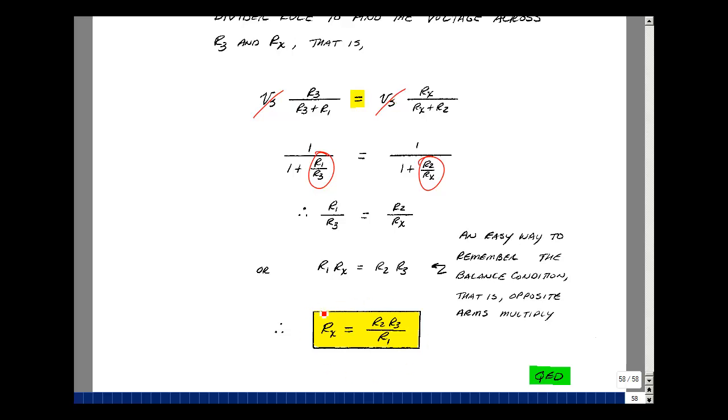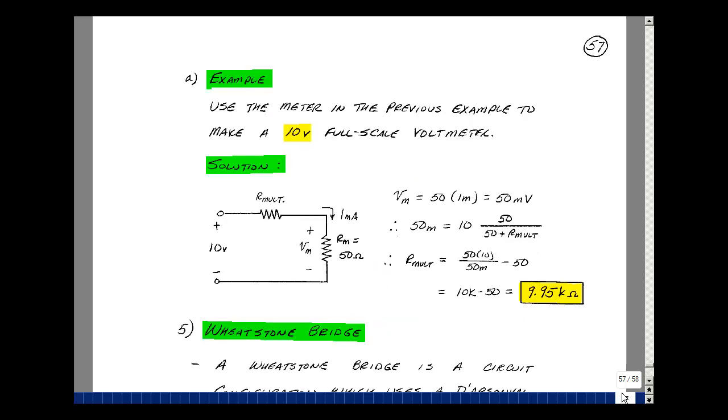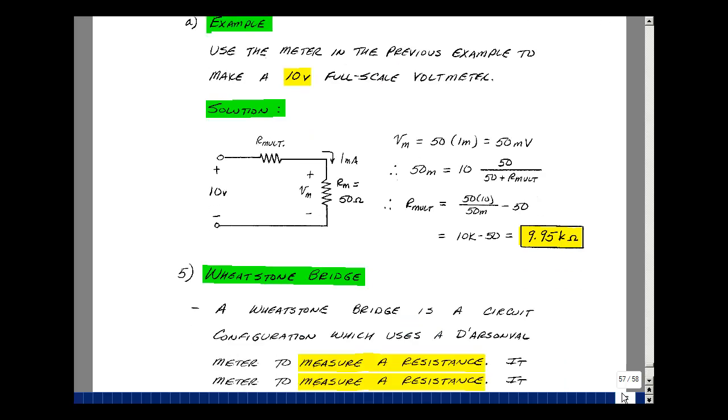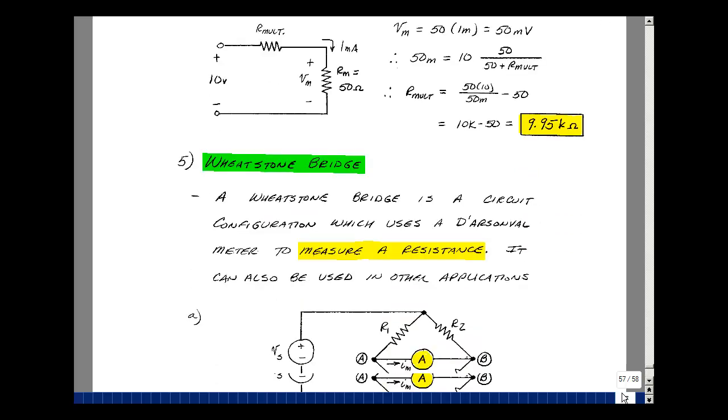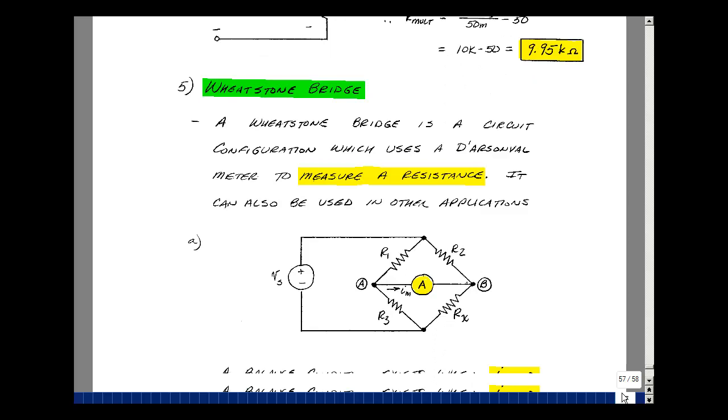This formula is hard to remember, but if you go back to the original bridge, R1 times R sub x equaling R2 times R3 - these were the values of the resistors that were across from each other. So if you want to remember the Wheatstone bridge condition in the future, it's R1 times Rx equals R2 times R3. This is only true when the current in the meter is zero.